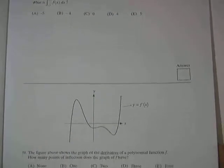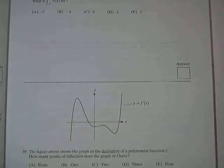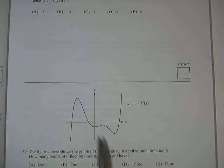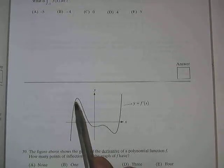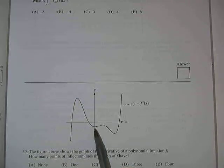Remember, we're looking at a picture of the derivative here. Points of inflection are candidates when the second derivative equals zero. Keep in mind, the second derivative of f would be the derivative of this graph. So when is the derivative of this graph equal to zero? One point would be right there, where the derivative equals zero.